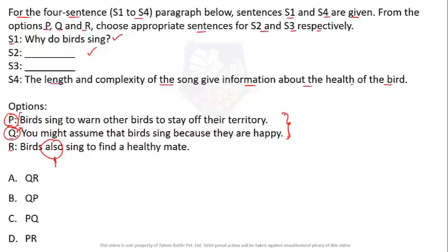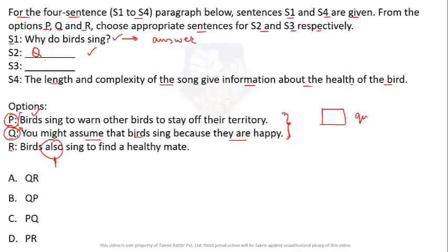Sentence Q is more suitable for S2 because first the wrong assumption is given — 'you might assume birds sing because they are happy' — then the correct answer follows in S3: 'birds sing to warn other birds to stay off their territory.' This pattern of stating a wrong assumption first, then correcting it, fits the structure. Sentence R ('birds also sing to find a healthy mate') uses 'also,' implying addition, so it cannot come first. The answer is QP, option B.